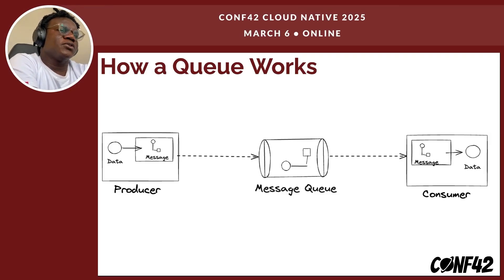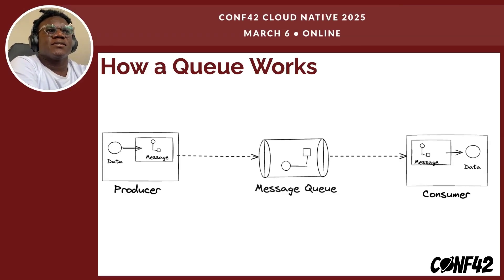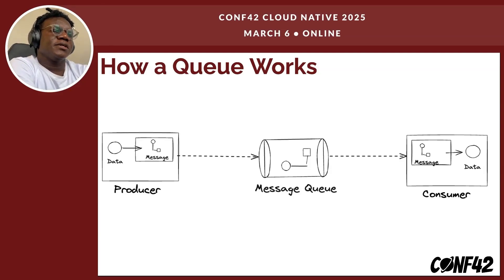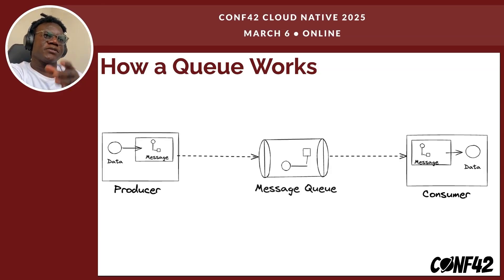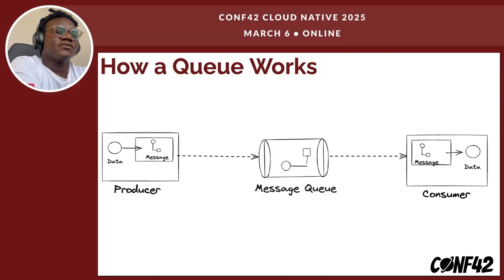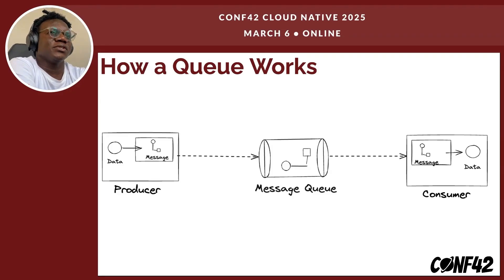A consumer is a component or system that picks up events from the message queue and processes them. In the e-commerce receipts example, the order service acts as the producer, sending a message to the queue, which is then consumed by the email or messaging service to send the user their receipt. Consumers subscribe to topics or events on the message queue — when a matching topic arrives, it gets routed to the right consumer.